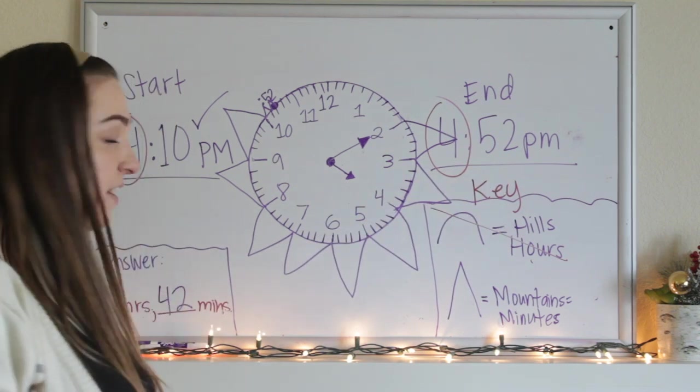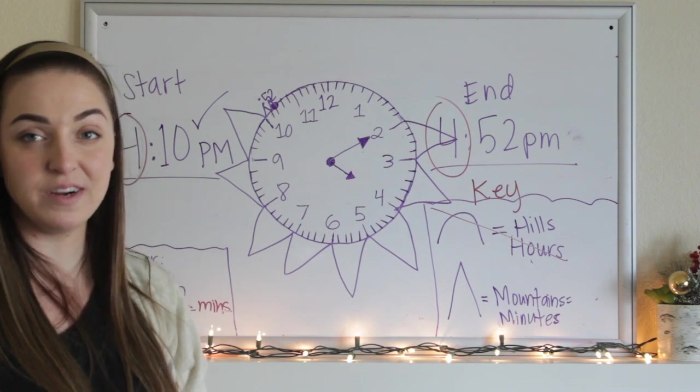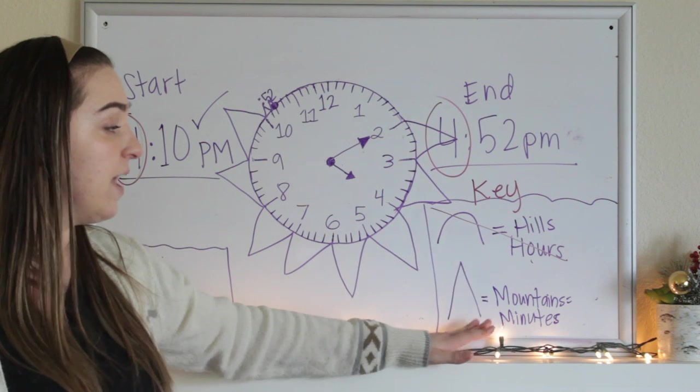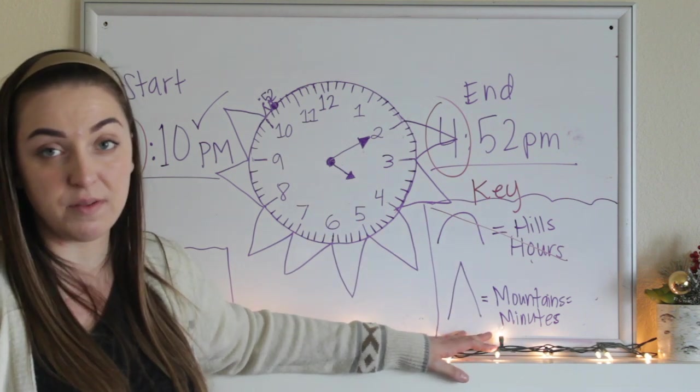This is how we are going to find elapsed time within the same hour. So I hope this lesson helped you out. Feel free to use the key of using hills for hours and mountains for minutes throughout the rest of the lessons of this week. Thanks for watching this video on creating a clock of your own. I hope that this clock we created together will help you throughout the rest of our lessons this week. Reach out to me if you need any help. Bye!